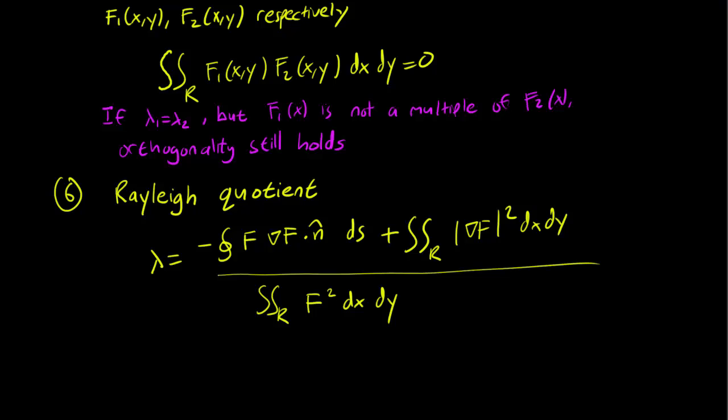And finally, we have the Rayleigh quotient, which is a way to calculate the eigenvalue from the eigenfunction using a nasty formula. This involves curve integrals on the boundary of the region, as well as double integrals of the region. So once more, we hope that boundary conditions simplify this calculation whenever we have to do it. And sometimes this nasty formula does give us useful information, just like it did in the one-dimensional case.